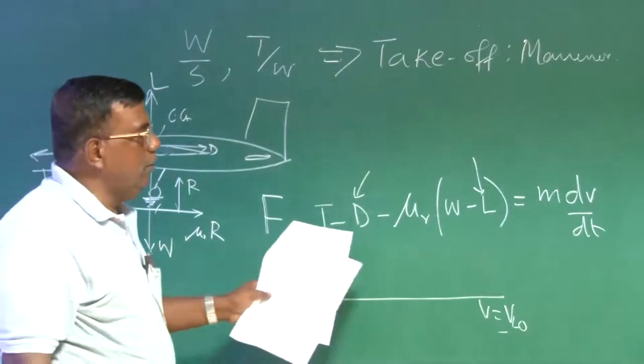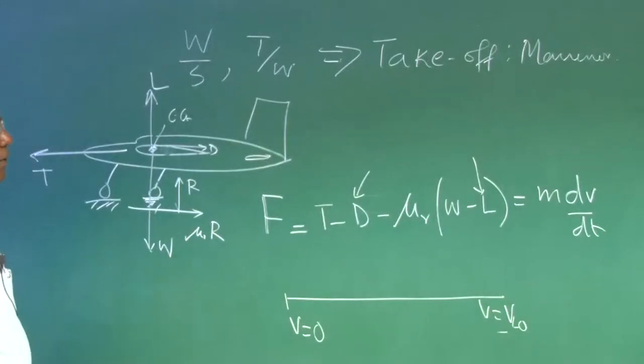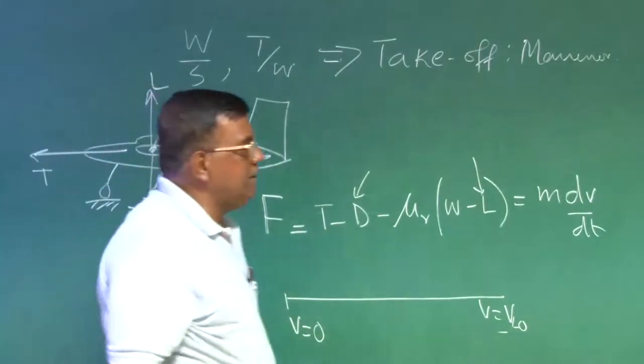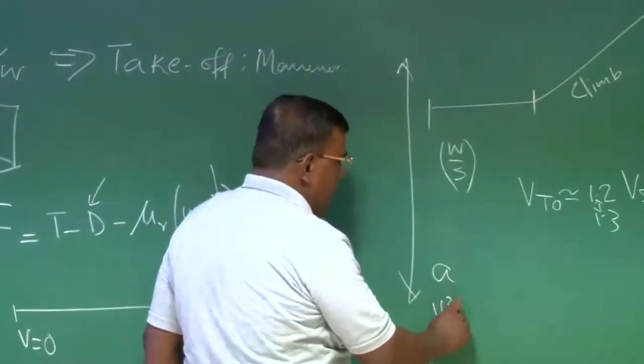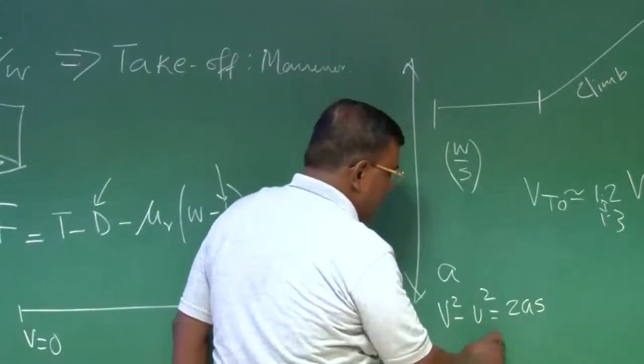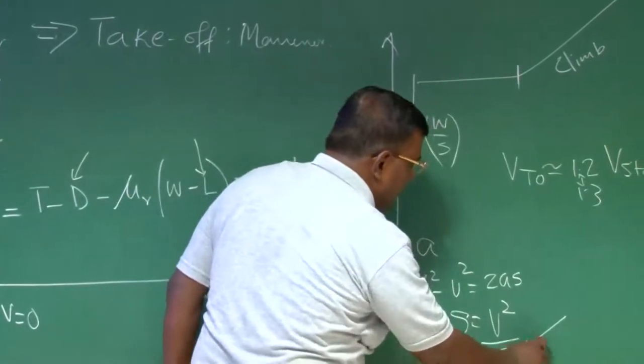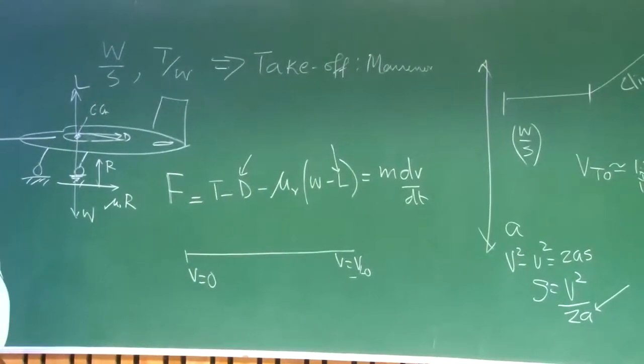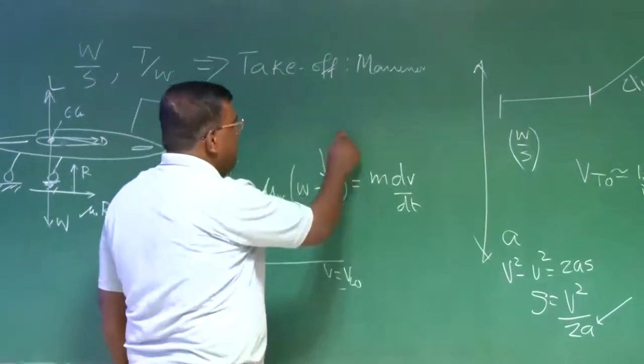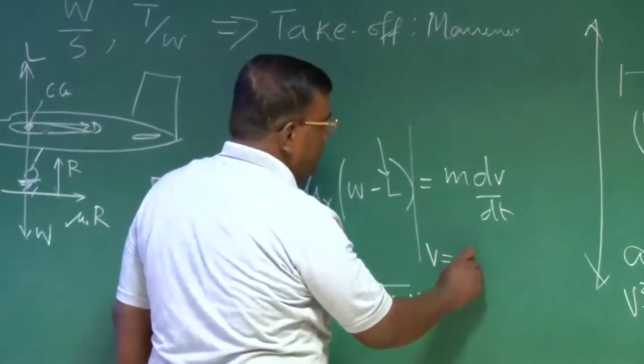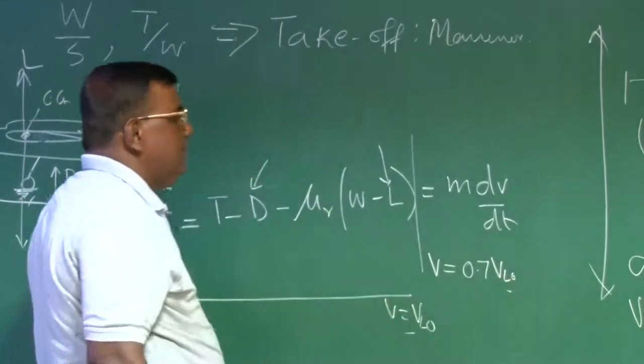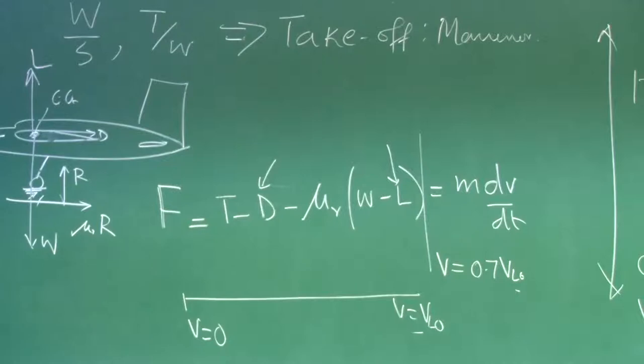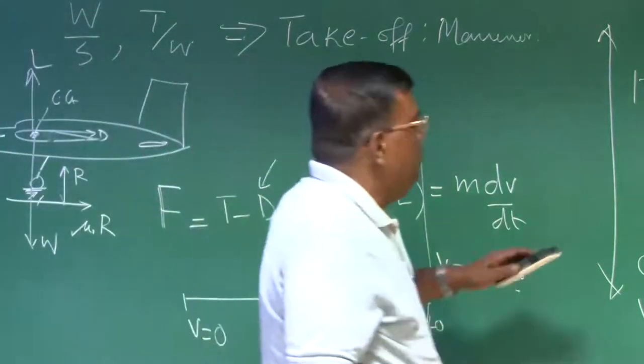The problem is, as I am increasing from V equal to 0 to V equal to V lift off, the drag and lift is also going to change because they are function of speed. A designer will not like to do all those meticulous thing. Designer will like to do with some average values. We will try to look for some average acceleration, which this net force is causing.